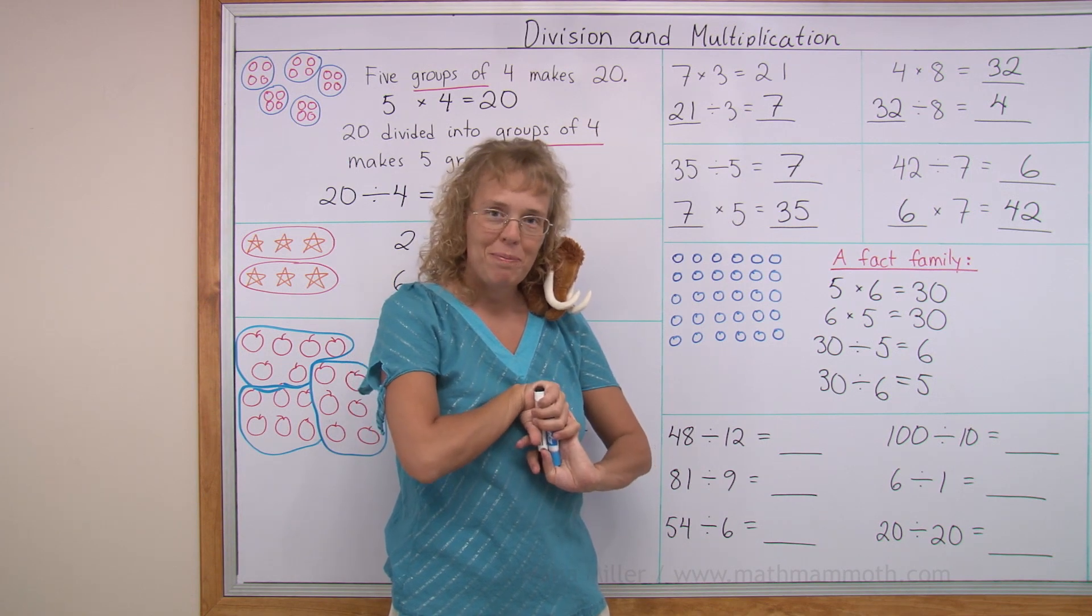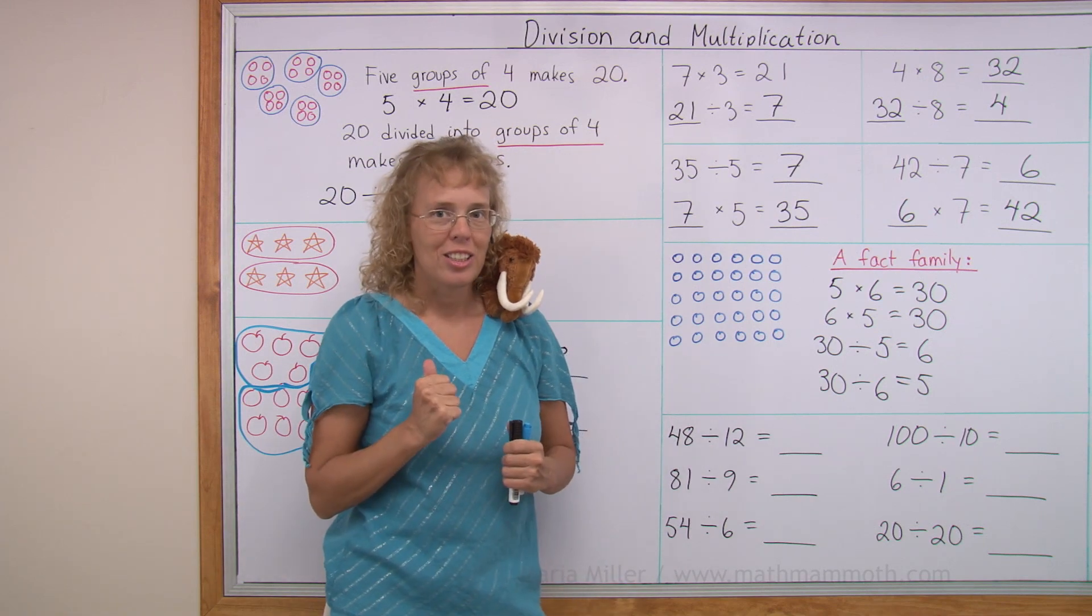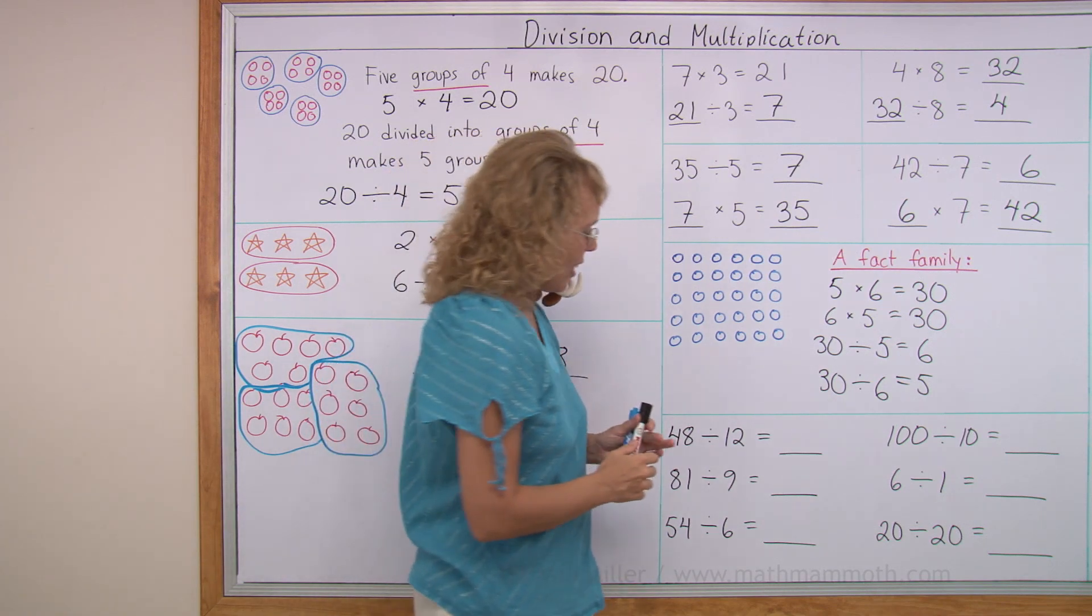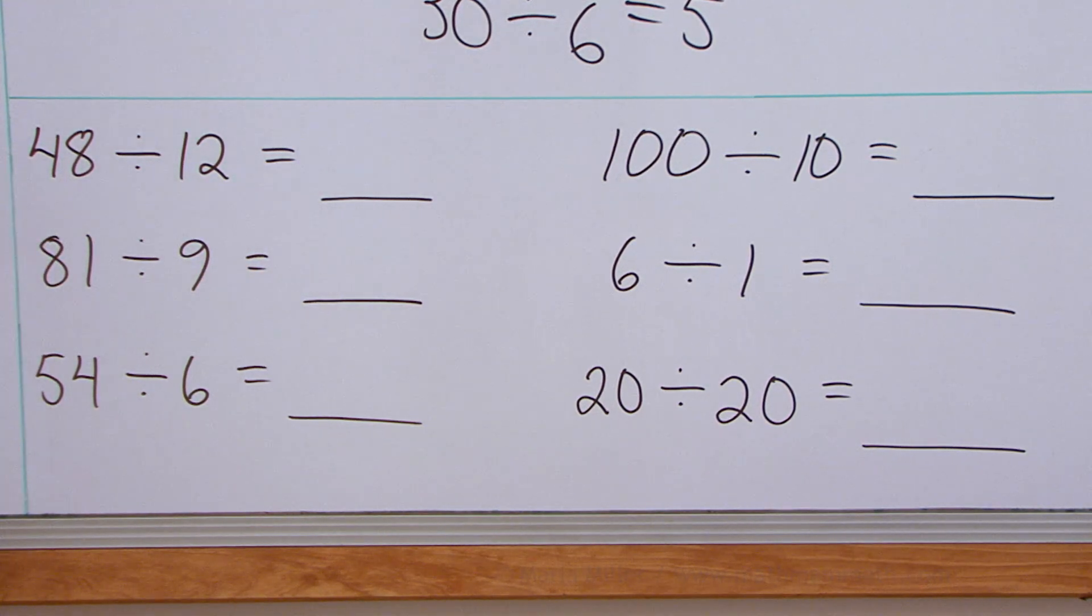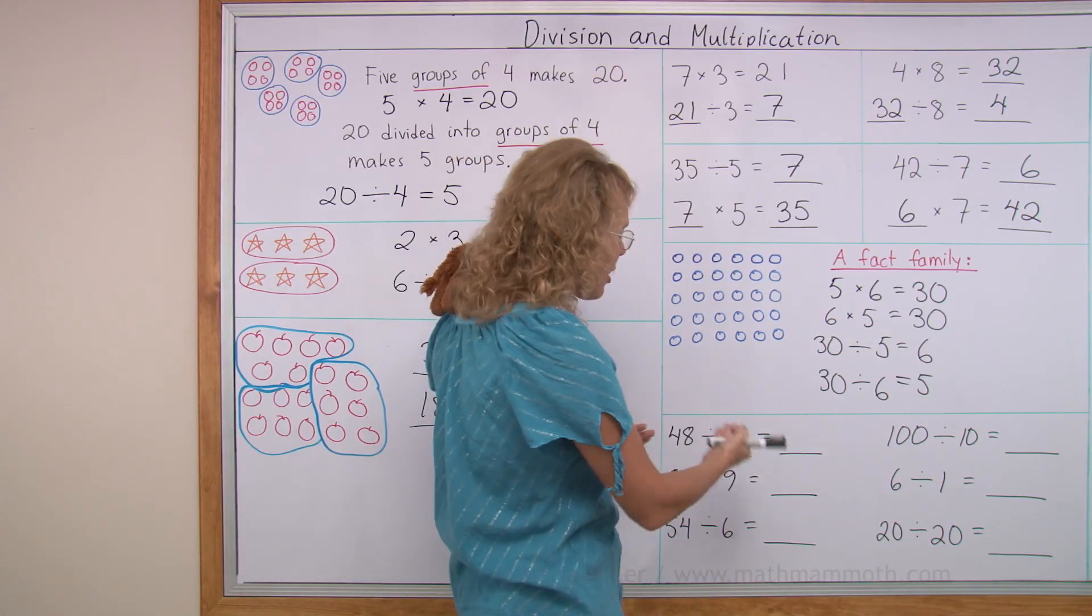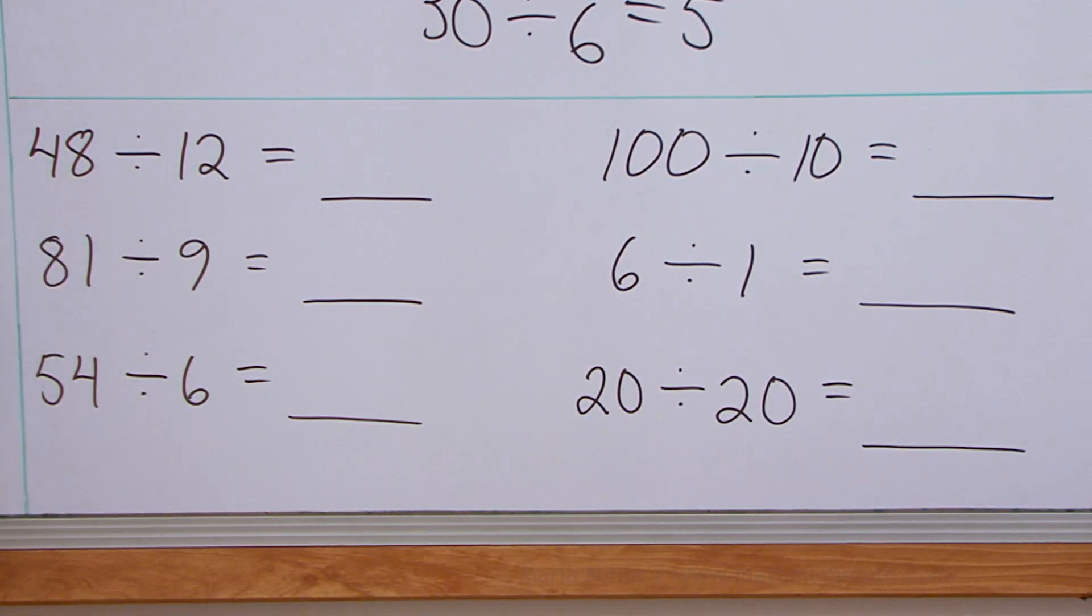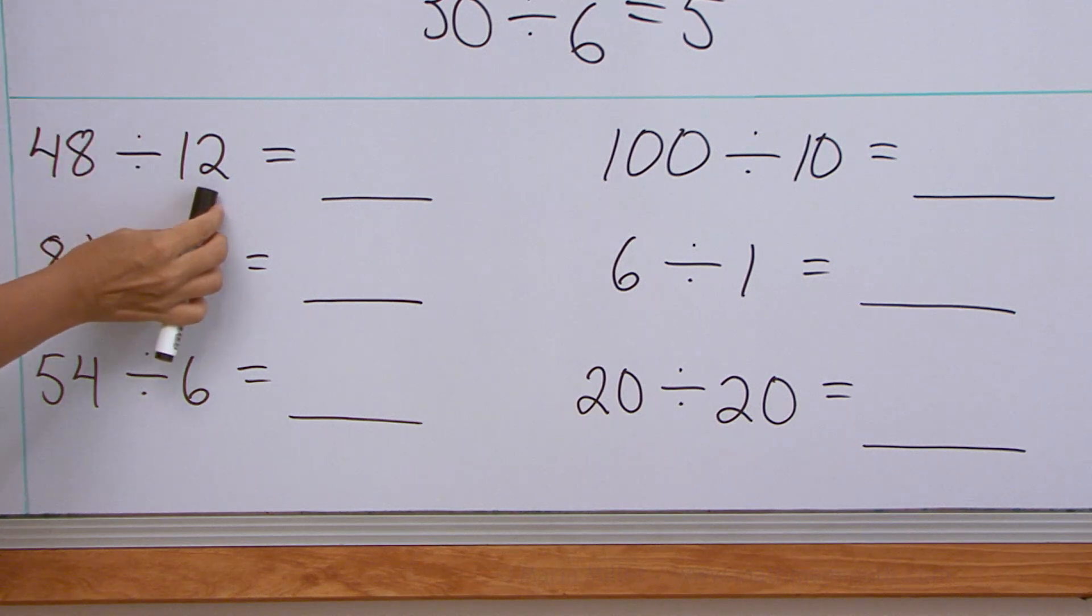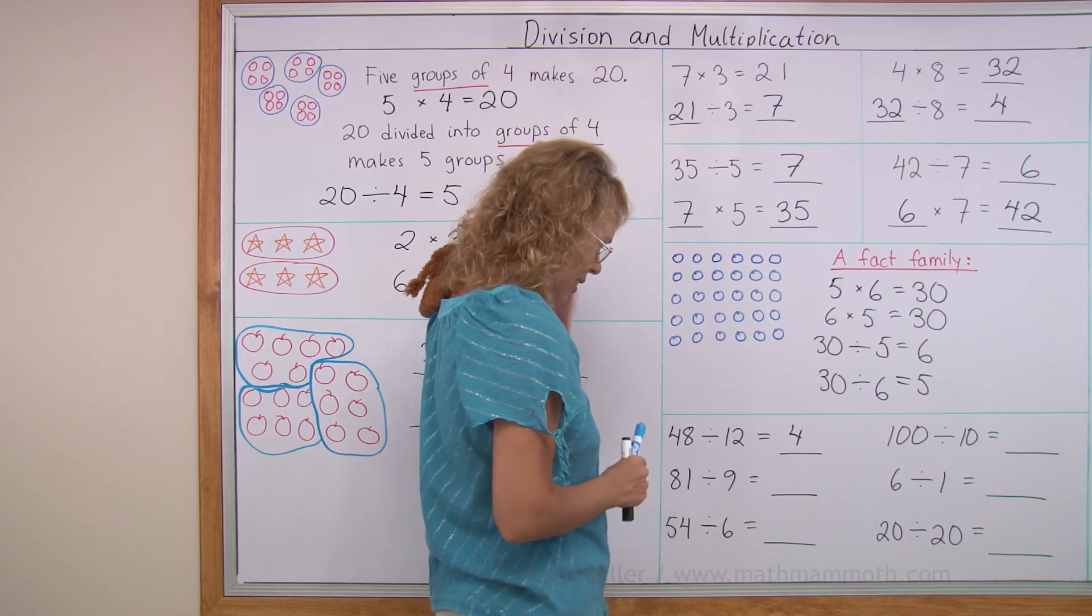And now, lastly, we're going to solve some division problems. And like I told you earlier, we will solve them by thinking of multiplication. So this is how you will think. What number times 12 equals 48? It's kind of like you go backwards, but you use multiplication. Because multiplication and division are opposite operations. What number times 12 equals 48? You can also think how many 12s are in 48. How many times 12 equals 48? So the answer is pretty clear. Four. Four times 12 equals 48.